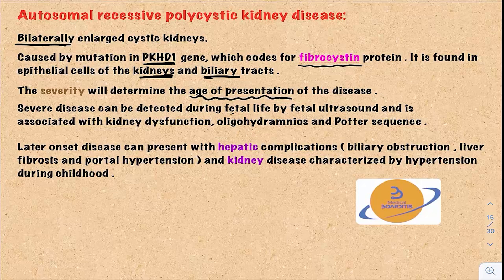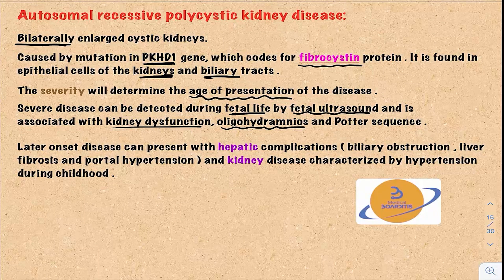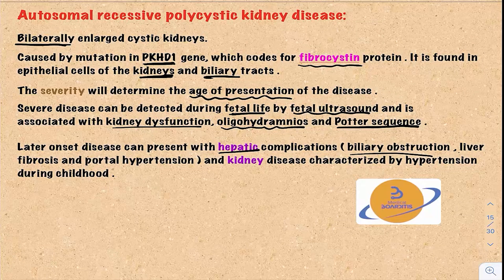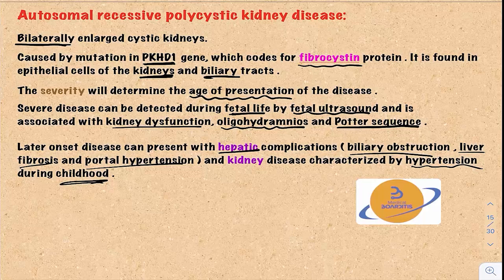Severe disease can be detected during fetal life by fetal ultrasound and is associated with kidney dysfunction, oligohydramnios, and Potter sequence. Late onset disease can be manifested with hepatic complications like biliary obstruction, liver fibrosis, and portal hypertension. Kidney disease is characterized by hypertension in childhood. The age of presentation is determined by the severity of the condition.